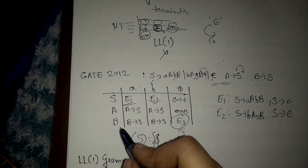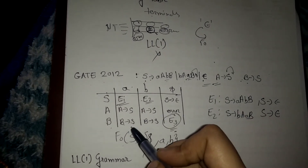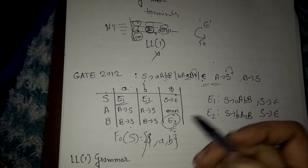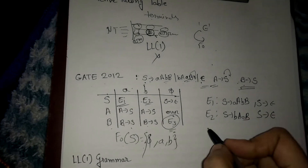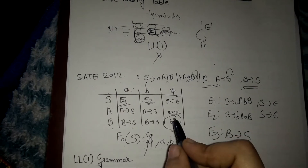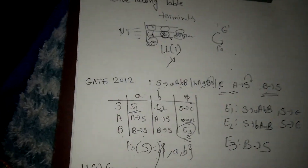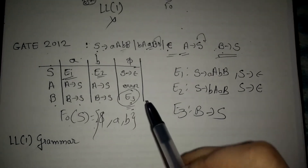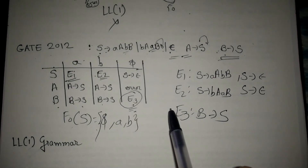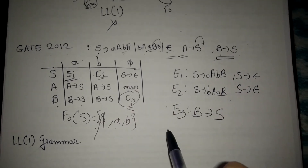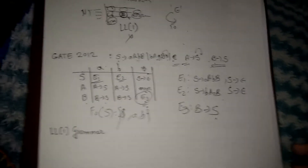For the remaining entry E3, we look at the production for B. B → S will be inserted at positions A and B. Since there is a single production for B, the same production is inserted in E3 as well. So the three entries are: E1 with two productions, E2 with two productions, and E3 with one production. Whichever option matches these entries is the correct answer.